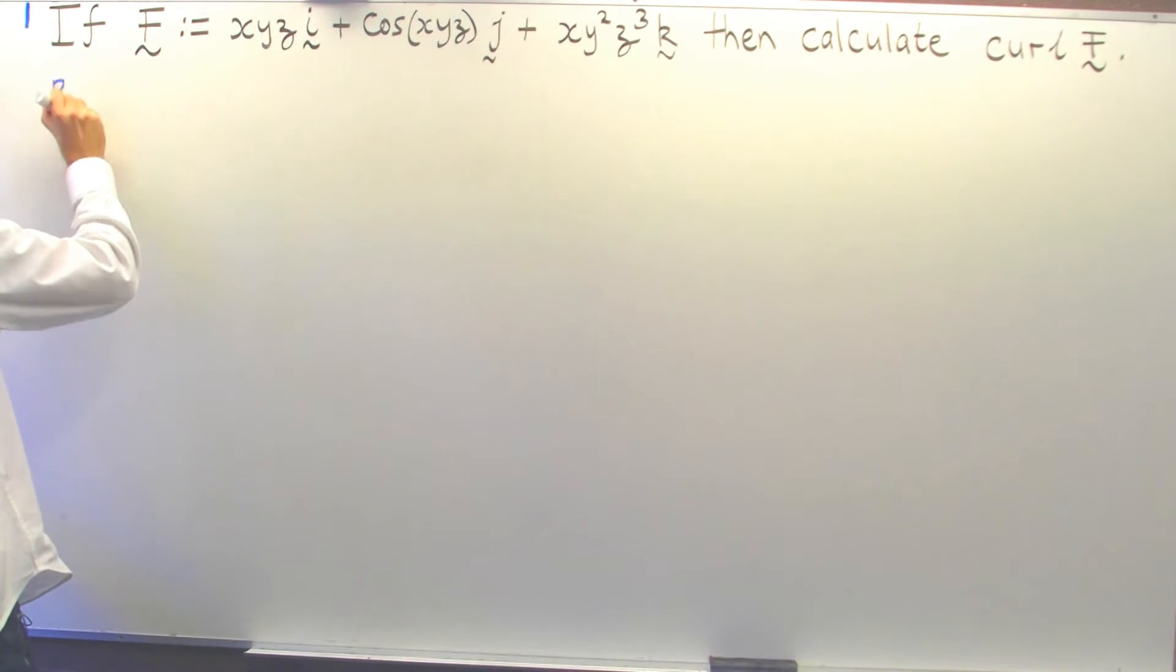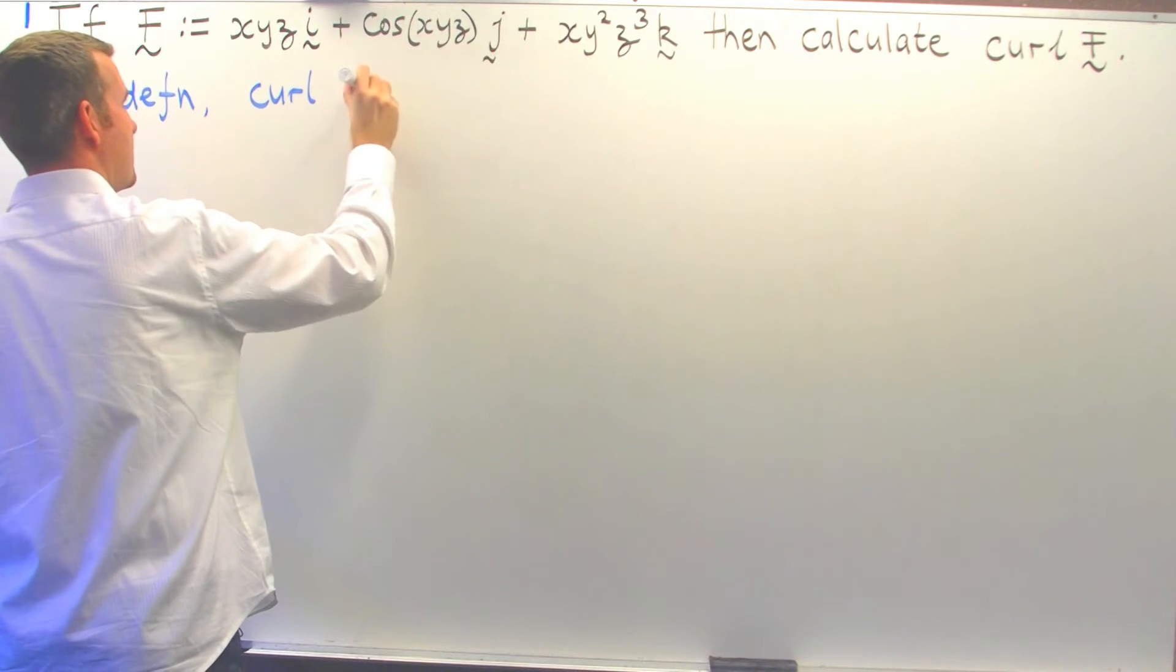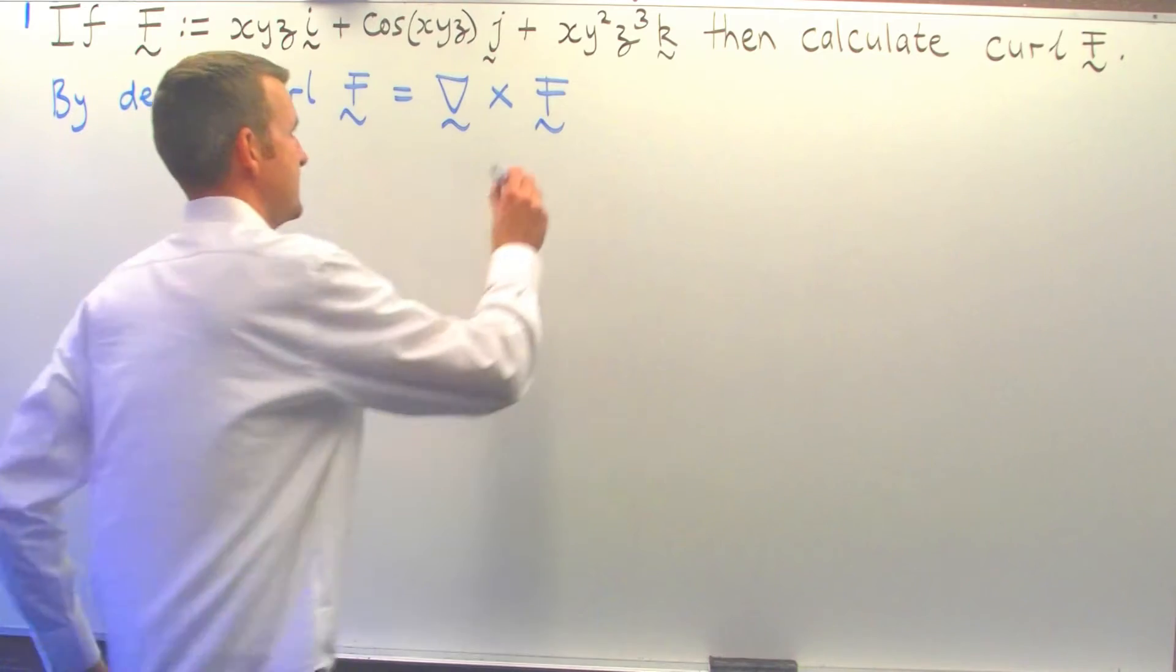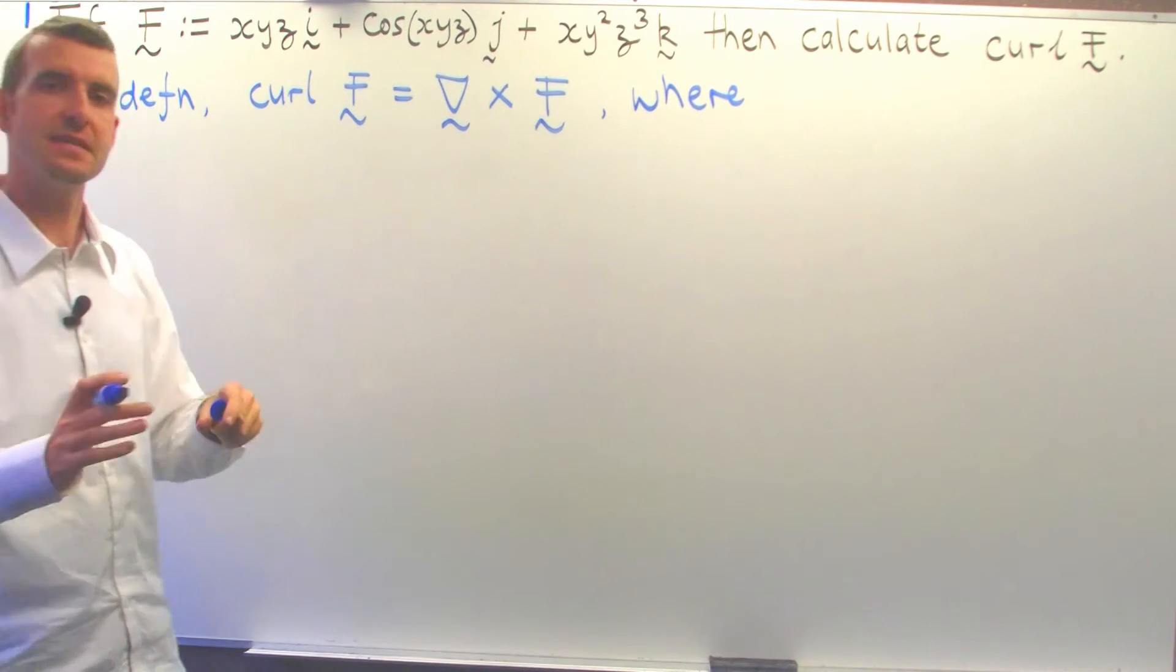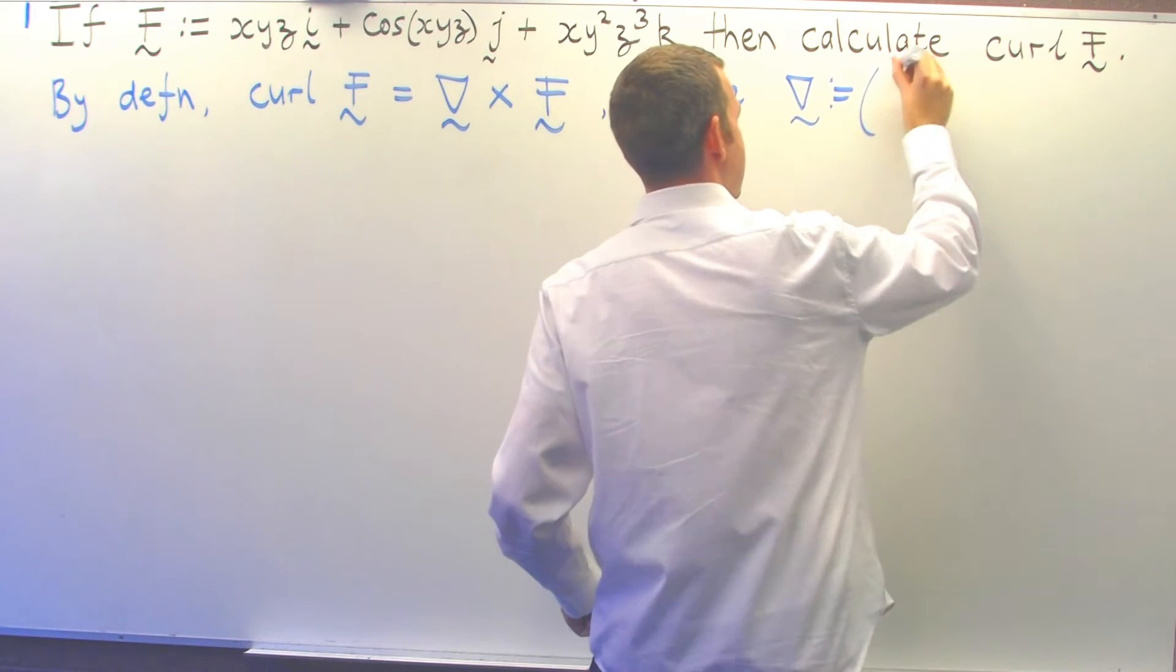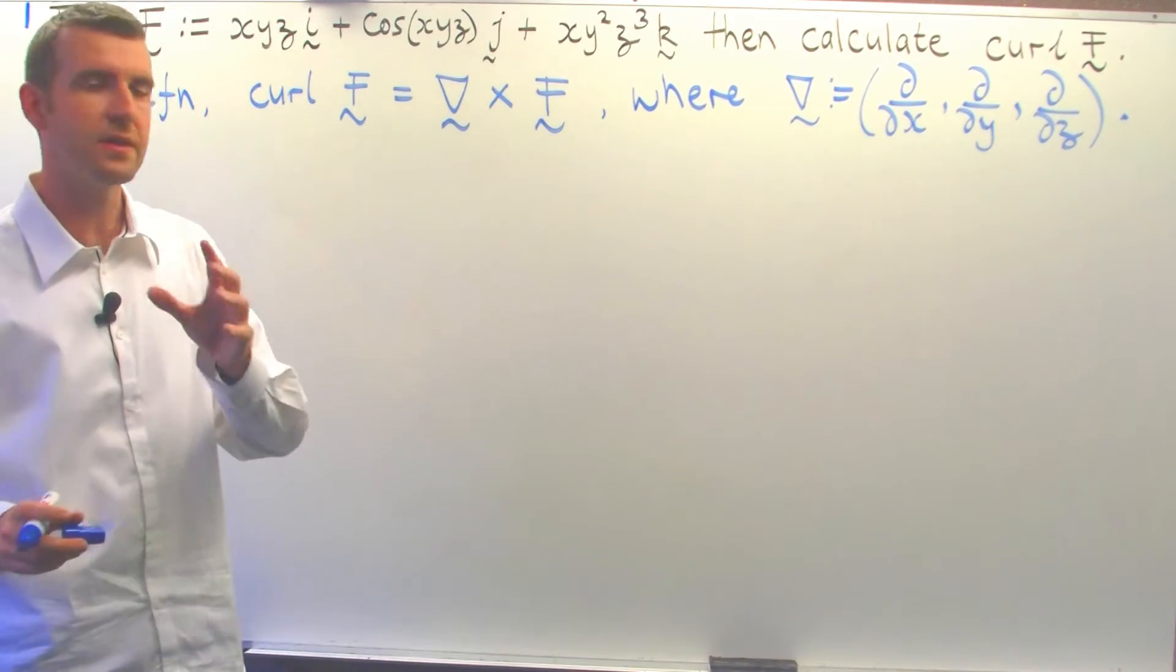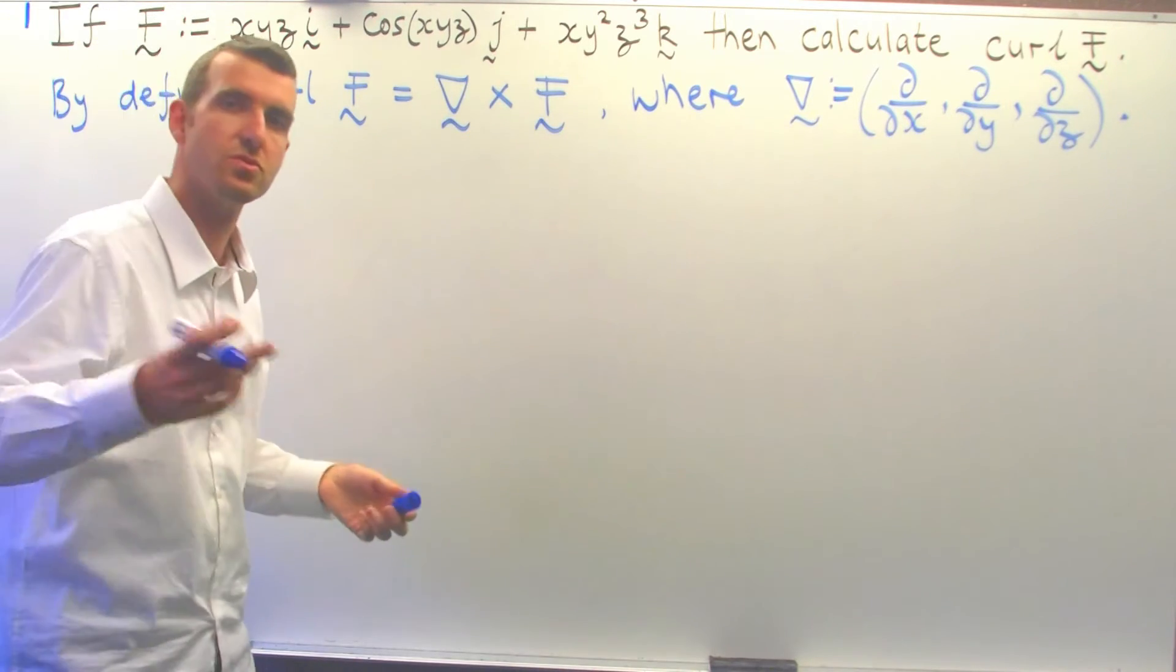The curl of a vector field involves this nabla or del operator and a cross product. Now this del operator, it's a symbolic vector, and it is the following. What we're going to do is get this del operator to operate on our vector field through this cross product.